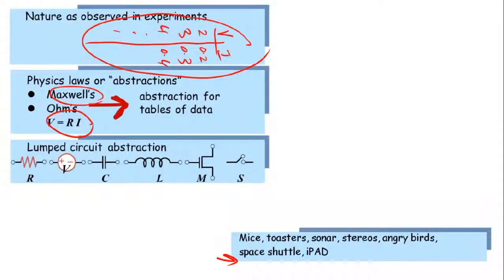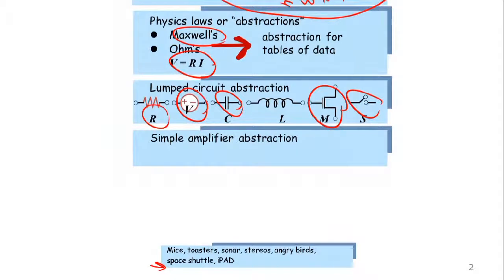In the lumped circuit abstraction, we have a set of lumped elements or discrete elements, such as resistors, capacitors, voltage sources, inductors, transistors like the MOSFET switches, and so on and so forth. So now, rather than using equations and equations, we build some abstractions and build some discrete devices that we shall use in building systems.